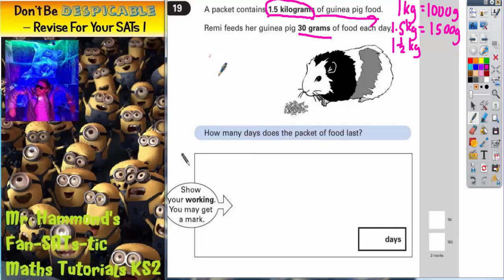That's the first thing we need to remember and that's what we should be writing in the answer box. 1.5 kilograms equals 1,500 grams. Now let's think what we can do with this 30 grams. We know that one day we will use 30 grams. Now we need to see how many lots of 30 grams goes in this 1,500.